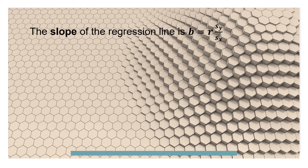The slope of the equation is b equals r times sy divided by sx. Plugging in the values, the correlation coefficient r is 0.7, the standard deviation of y is 12, and the standard deviation of x is 8. So the slope will be 1.05.